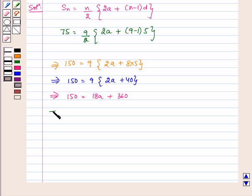This implies 18A is equal to 150 minus 360. This implies 18A is equal to 150 minus 360. This implies 18A is equal to minus 210 divided by 18.